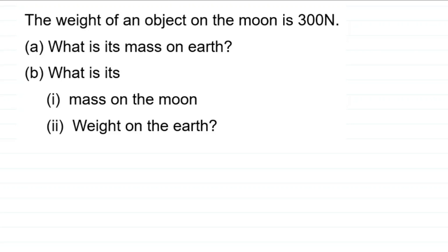Hello guys, welcome to the DMS Online School. In today's video we are going to look at a question coming from mass and weight. This question is a little bit tricky, and that is why I've decided to bring it to you so that you must be able to answer it correctly when you meet it in an exam. The question reads: the weight of an object on the moon is 300 newtons. (a) What is its mass on earth? (b) What is its (i) mass on the moon, and (ii) weight on earth?